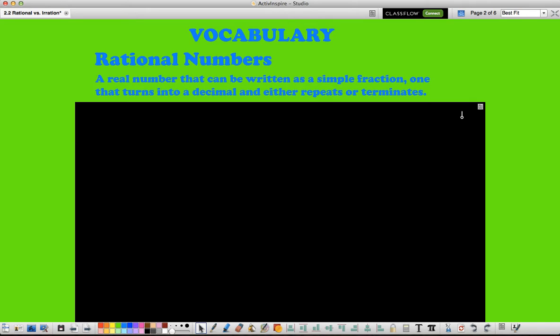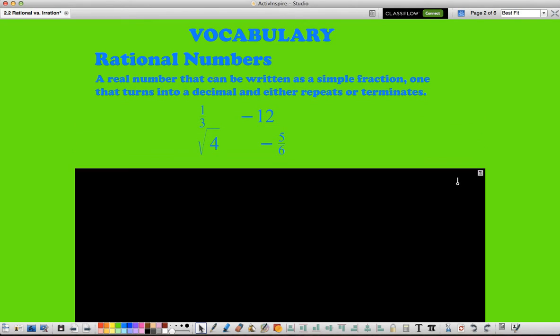Basically, all you're looking for when you're looking at your rational numbers is, is this number going to go on forever and never repeat? Some examples of rational numbers would be like one-third, square root of 4 which we know is 2, negative 12, negative 5, 6. So even though one-third is 0 and 3-tenths repeating and that 3 goes on forever, since it repeats, it is a rational number.